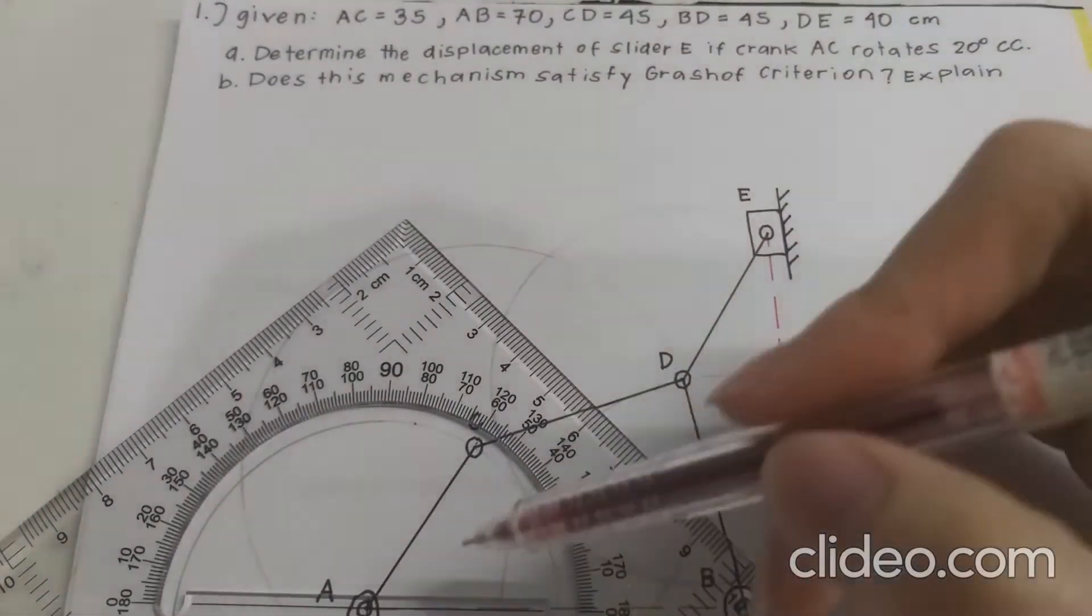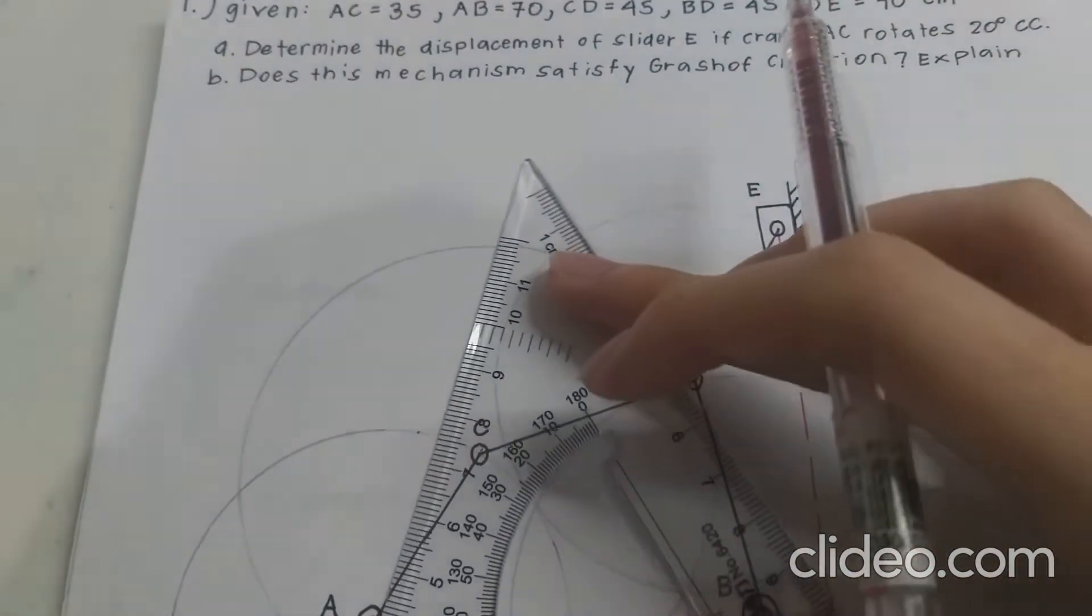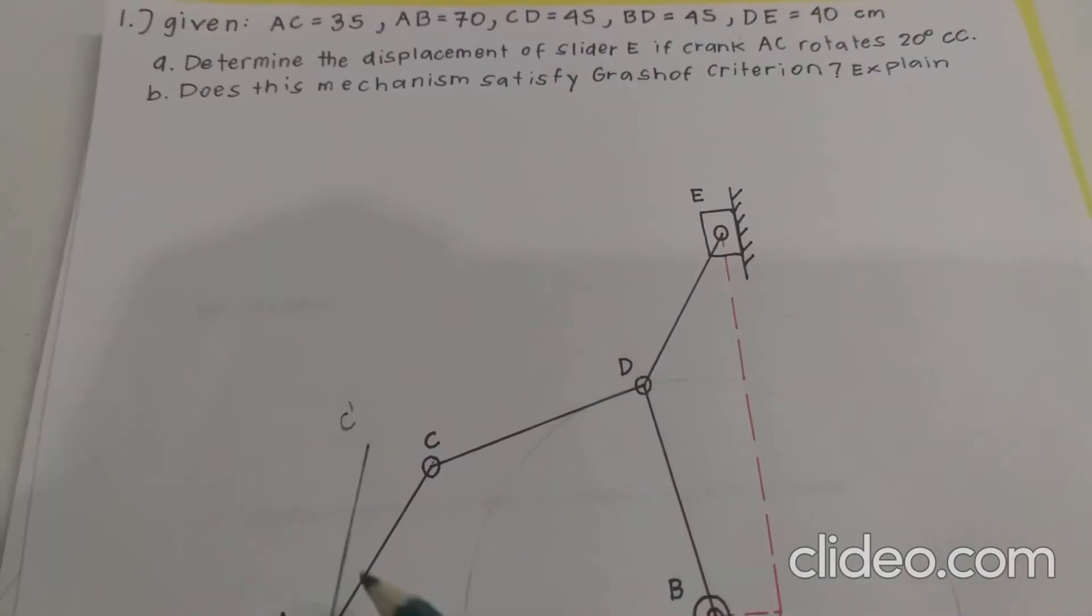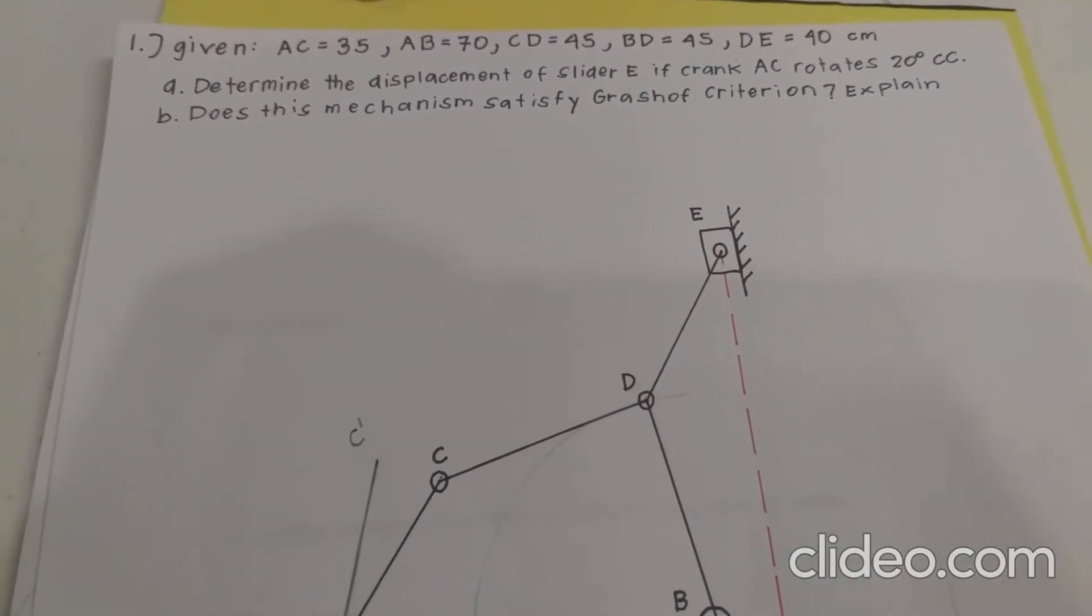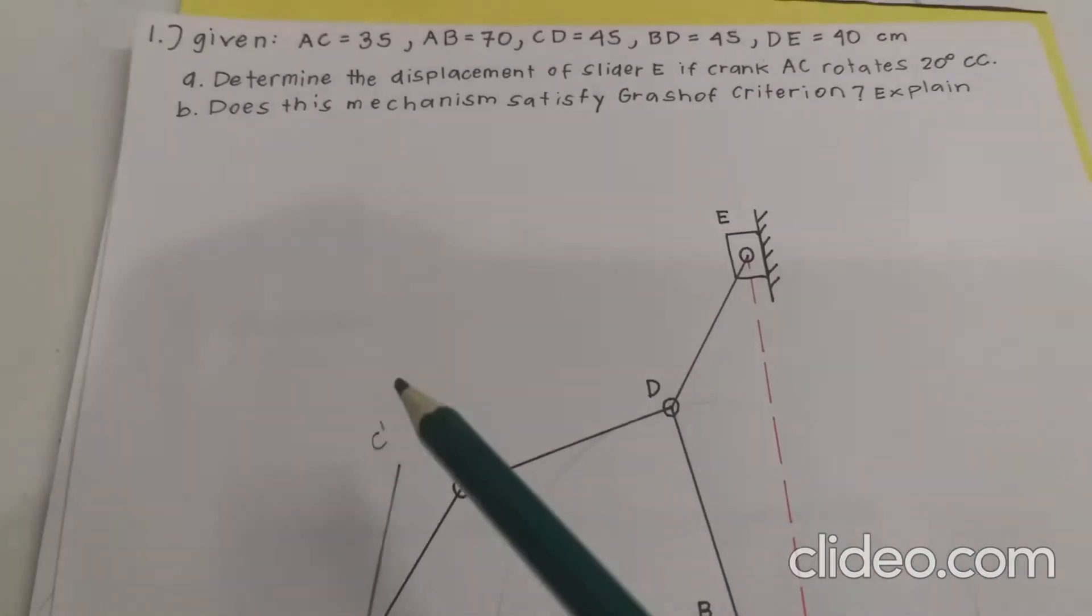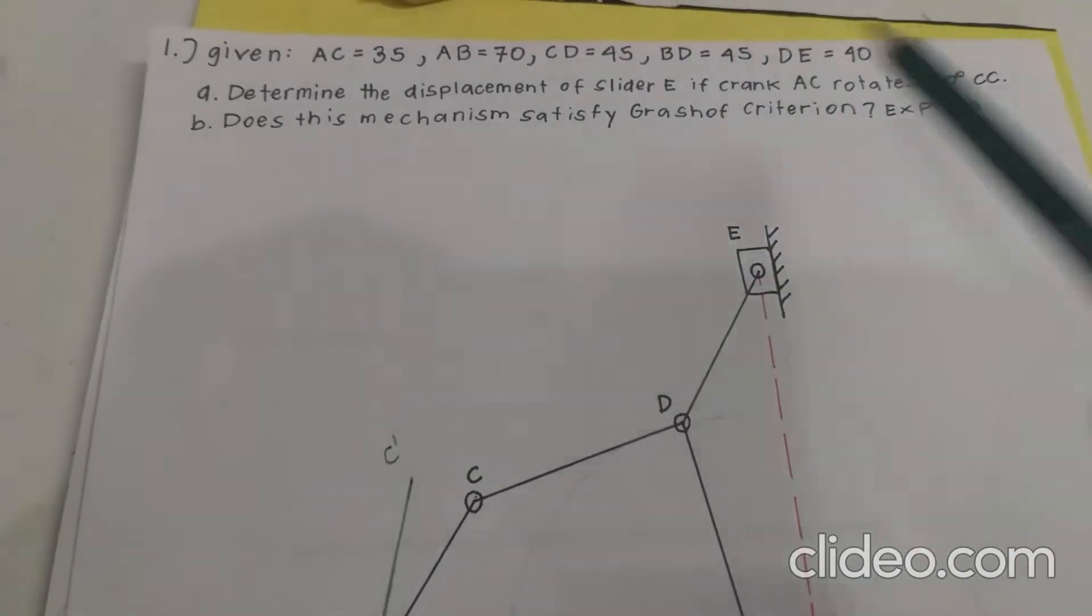So what we will do, we will write a new line from point A to C prime. Now that we have our C prime, we have to determine where our D prime would be. And let us remember that the distance from C to D is 45 centimeters.